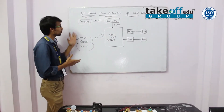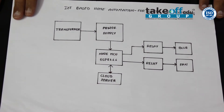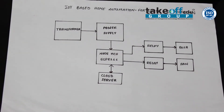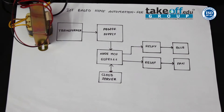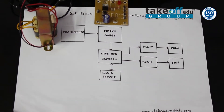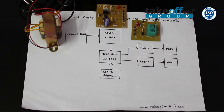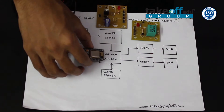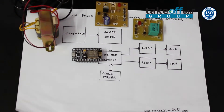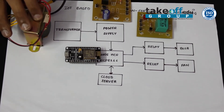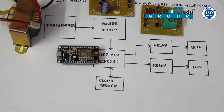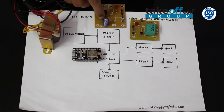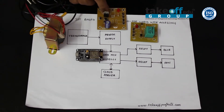We have discussed the block diagram of our project. Now we are going to see the hardware. This is the transformer, which looks a bit different compared to the real-time component. This is the power supply board used in our project. This is the relay board used for switching functions. For controlling the whole operation, we are using a NodeMCU. This is the Wi-Fi module which can be controlled from wherever we go. The transformer outputs 12 volts AC, and diodes convert the AC to DC, with a voltage regulator giving a 5 volt output.